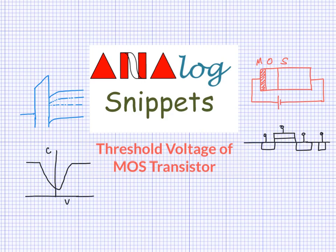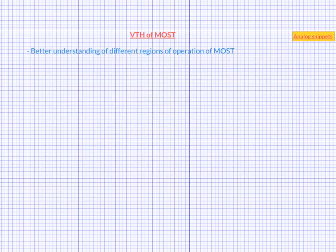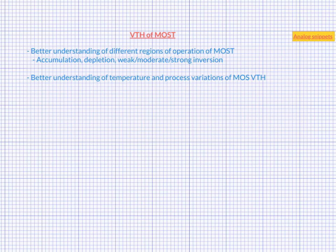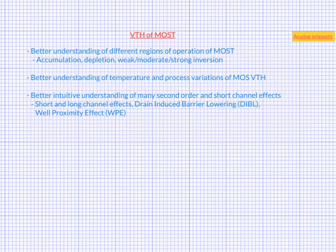Threshold voltage is one of the most important parameters of MOS transistor, so it's only natural that a good understanding of its origin is important in circuit design. This understanding would help us to better understand the different regions of operations of MOS transistor. It would also help us better appreciate various temperature and process variations in threshold voltage, and various second order and short channel effects would make better intuitive sense. We would also better understand the differences and similarities between different flavors of transistors available in a given technology.